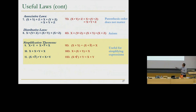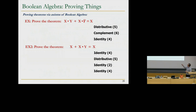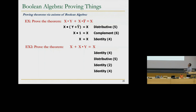Proving the simplification theorem: X·Y + X·Y-bar — we distribute X over (Y + Y-bar) using the distributive law. Y plus Y-bar is one because either Y or Y-bar is true; X times one equals X. For the second theorem X + X·Y: X means X AND one, so we write X·1 + X·Y, distribute X over (1+Y). One plus Y is one because anything ORed with one is one. Then X AND one is X.